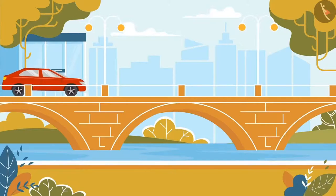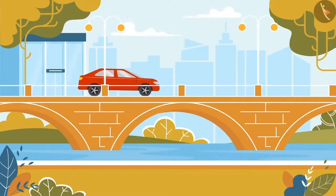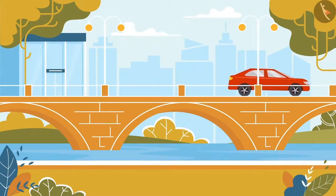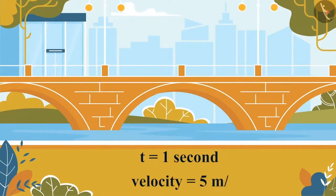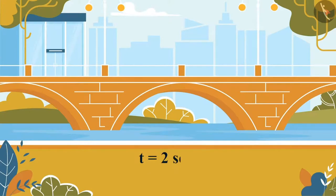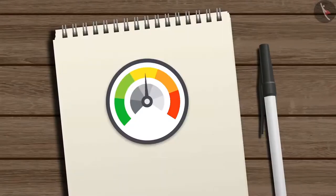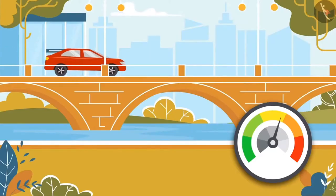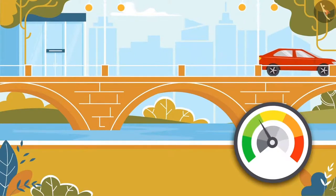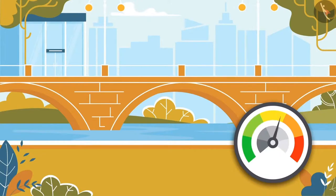Suppose a car starts from rest and begins moving on a straight road with a constant acceleration of 5 meters per second squared. The velocity of the car at t = 1 second is 5 meters per second; at t = 2 seconds, velocity is 10 meters per second, and so on. As its velocity increases by an equal amount in equal time intervals, the acceleration is said to be uniform. On the other hand, if the same car increases its velocity by unequal amounts in equal intervals of time, then the car is said to be moving with non-uniform acceleration.